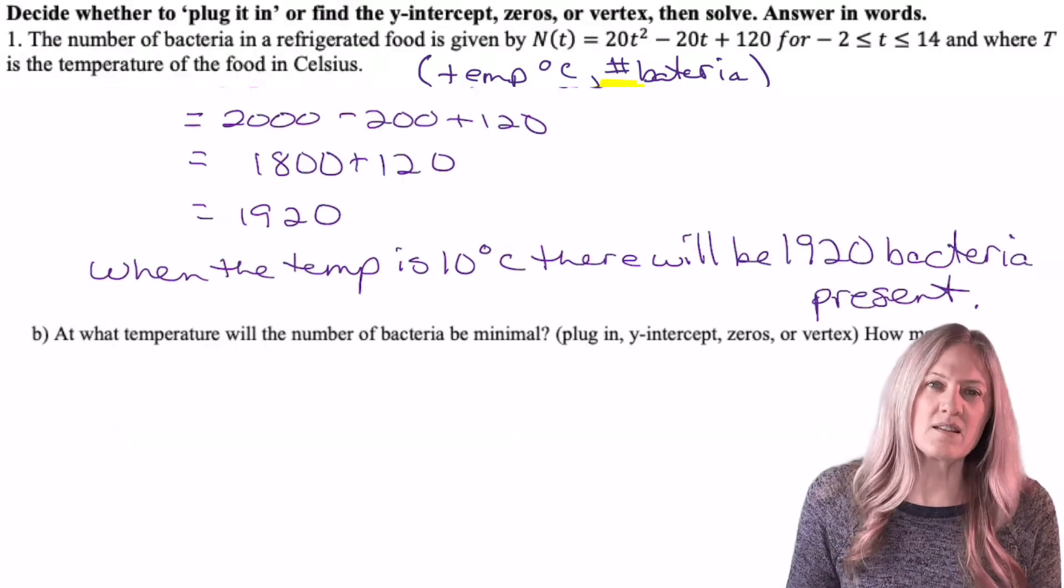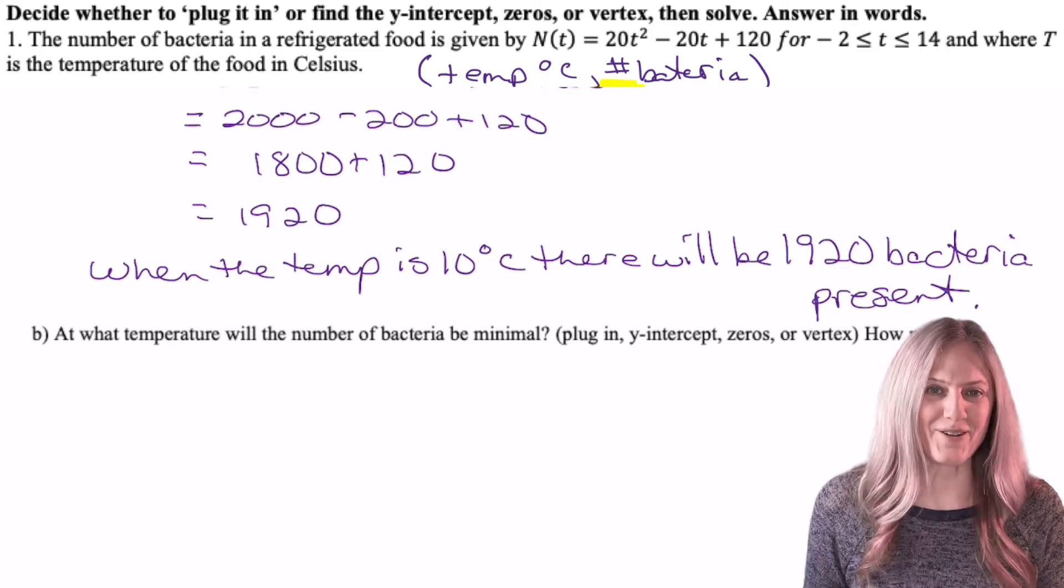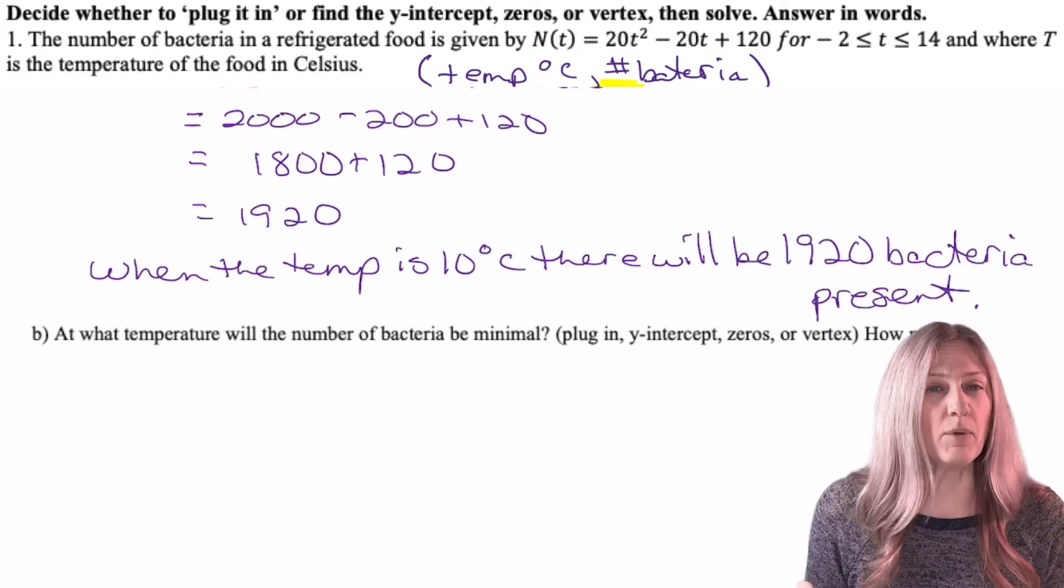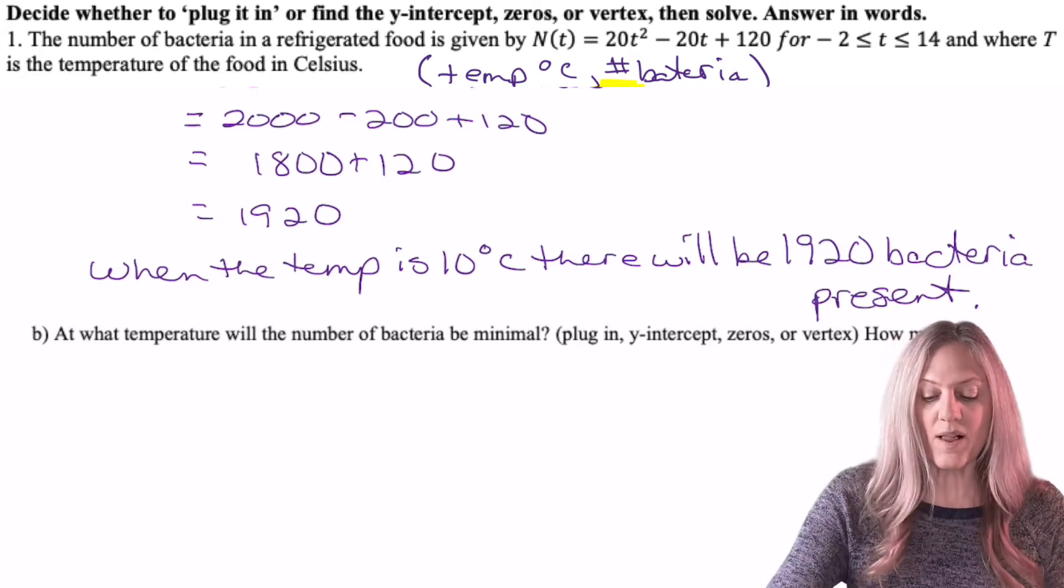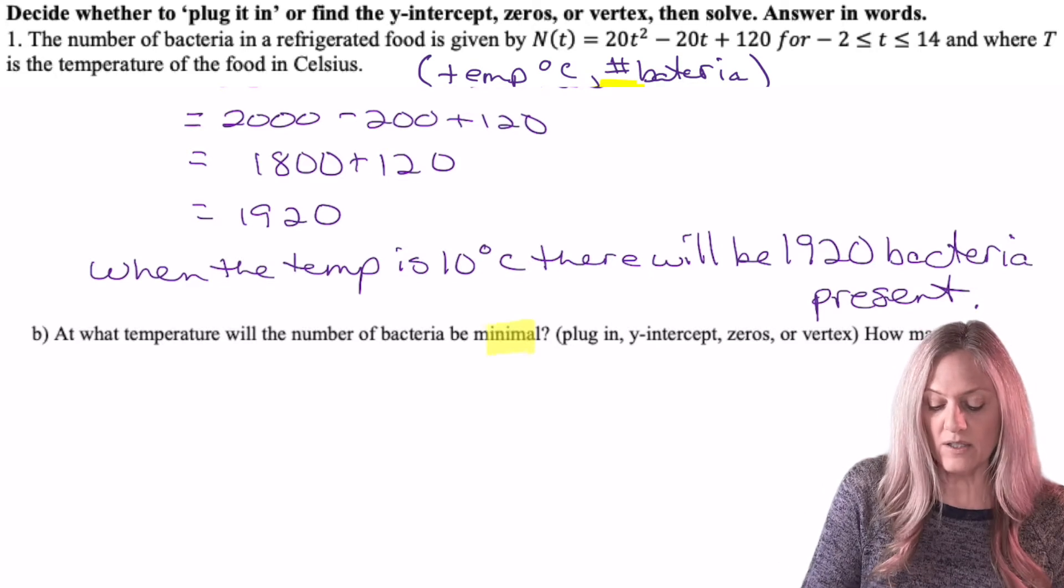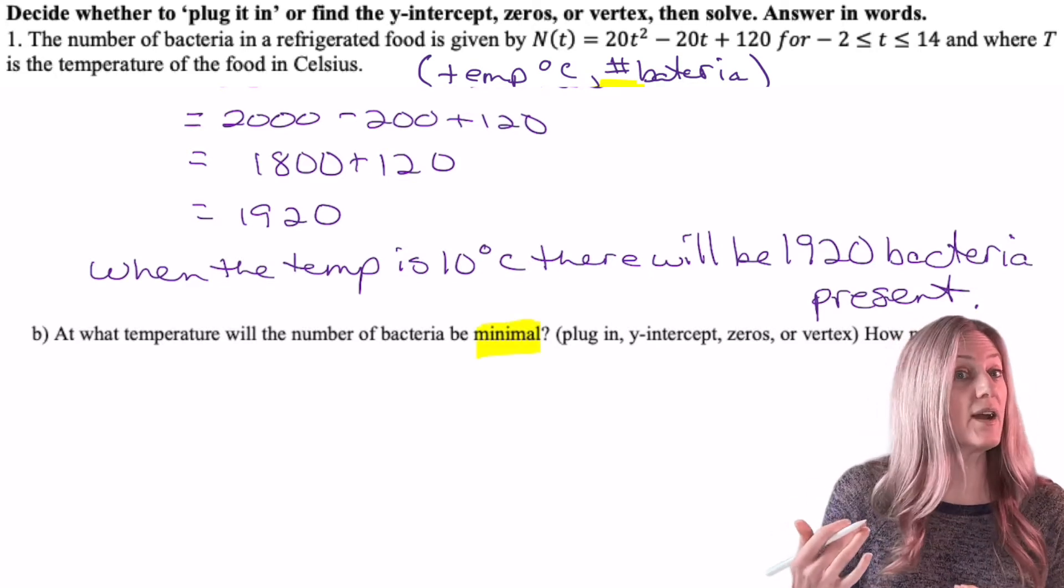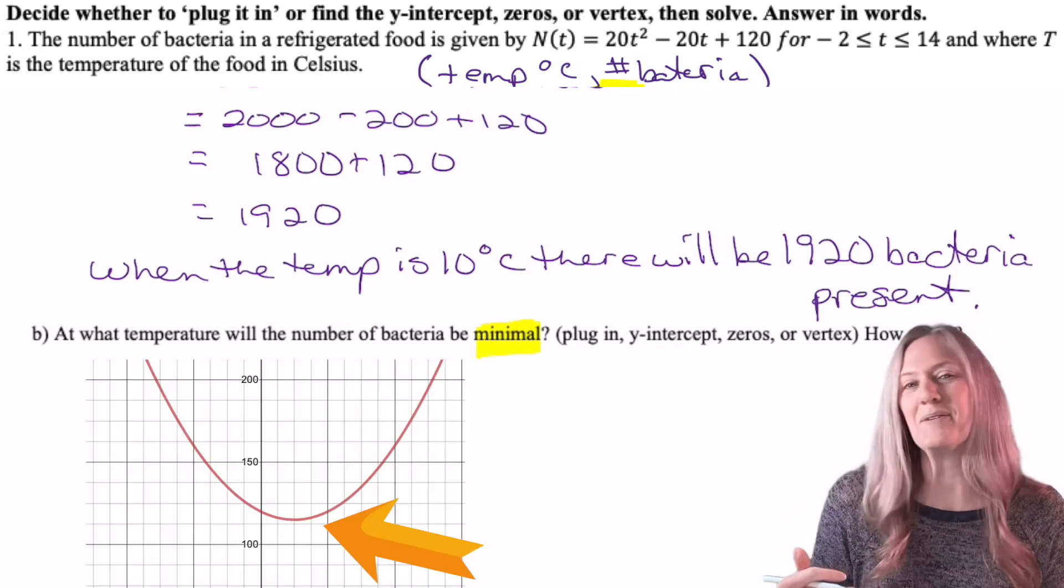It's always nice to give the answer in context of the question, including when it occurs. Next we're asked, at what temperature will the number of bacteria be minimal? I think that word minimal indicates something about the parabola. It's an x squared, so I know it's a parabola. When did we find the minimum? We found the minimum from the vertex.